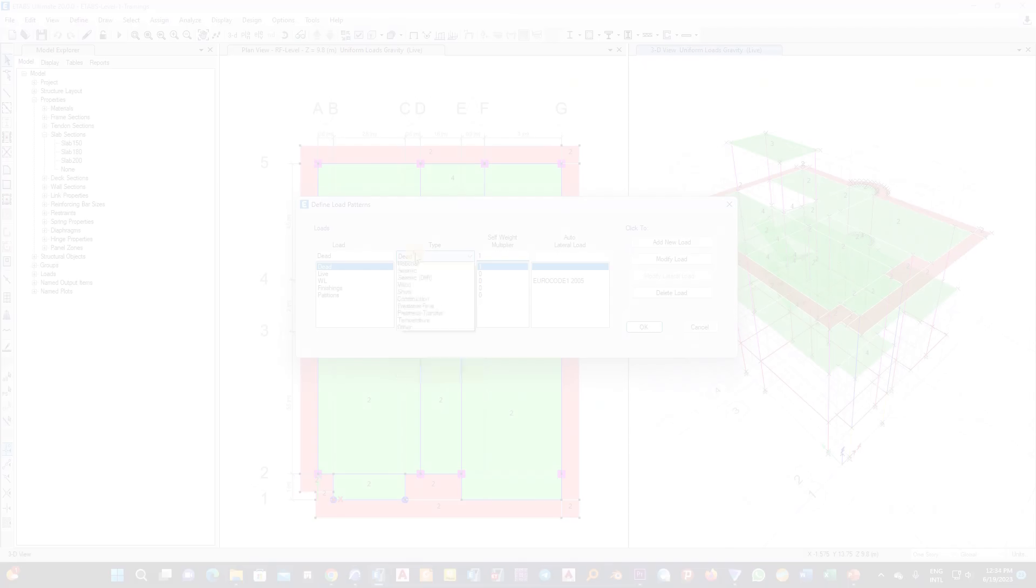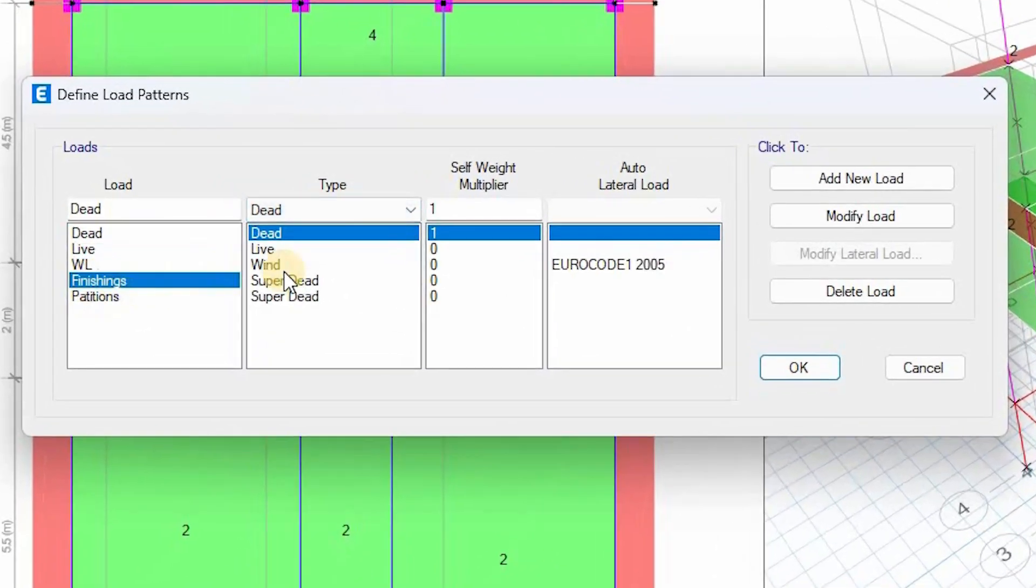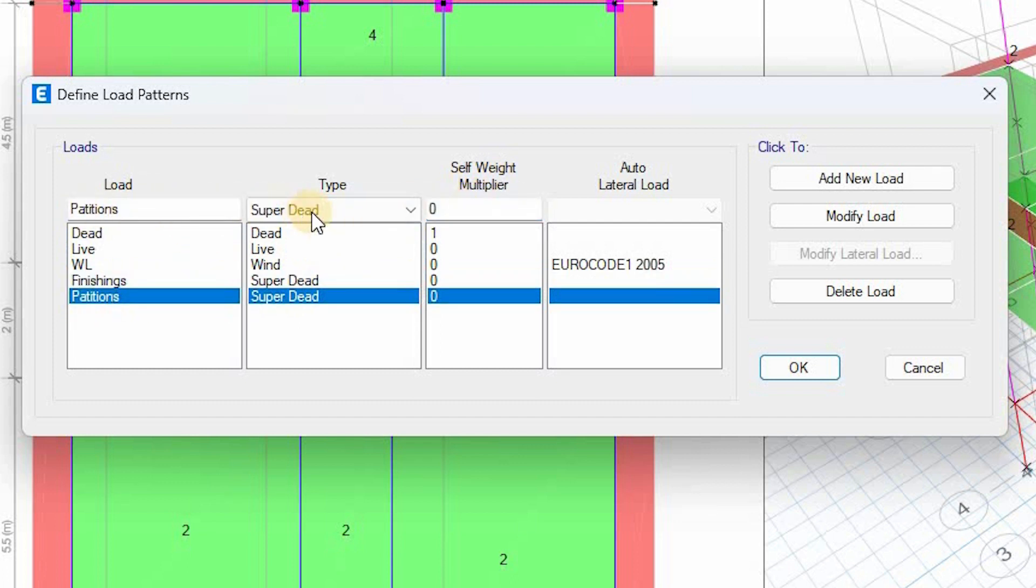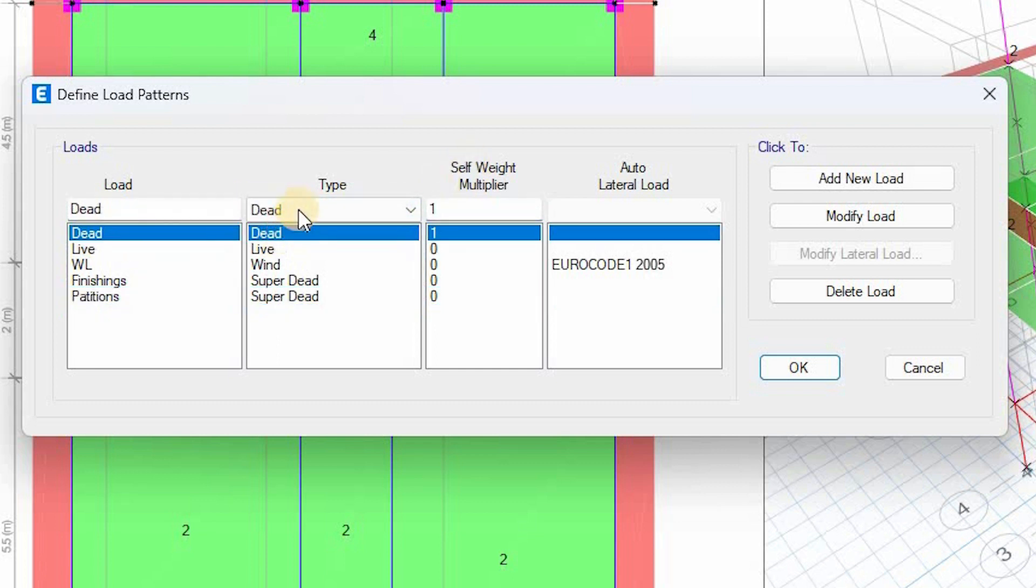Now let me take you again to the software. Here it is, for example here finishing, I have this, it is super dead and the self-weight multiplier is zero. Done. And maybe partitions—partitions here, super dead, the self-weight multiplier is zero. But dead, that is the dead part, then the self-weight multiplier will be one. Done. So this is how you will define the dead load in ETABS.